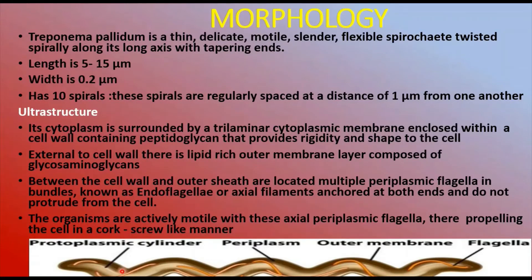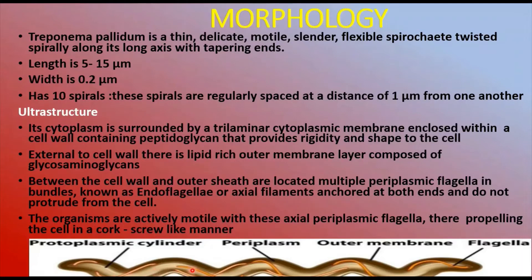Treponema pallidum shows motility by rotation around the long axis, with backward as well as forward movements caused by flexion of the whole body. During motion, secondary spirals or curves appear and disappear in succession, while the primary spirals remain unchanged. Its movement is somewhat similar to how an earthworm moves forward and backward.